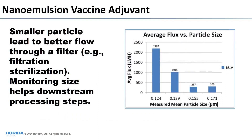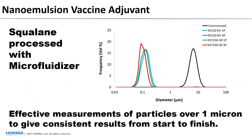Another example is a nano emulsion vaccine adjuvant. If you consider filtration sterilization, you can plot flux through a filter as a function of mean particle size. For a 200 nanometer filter, you can push much more material through at 120 nanometers compared to 170 nanometers. So this downstream process benefits from monitoring particle size via laser diffraction at the beginning. Although this size range could also be analyzed with dynamic light scattering, we also offer DLS when it's more appropriate.